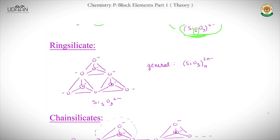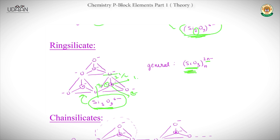Ring silicates have a general formula of SiO₃²⁻ᵢₙ or specifically Si₃O₉⁶⁻ for a three-unit ring. There is a trick: count one silicon, two unshared oxygens, and the two bridging oxygens are each shared half-half. So the effective oxygen count per silicon is 2 + 0.5 + 0.5 = 3, giving the general formula SiO₃²⁻.